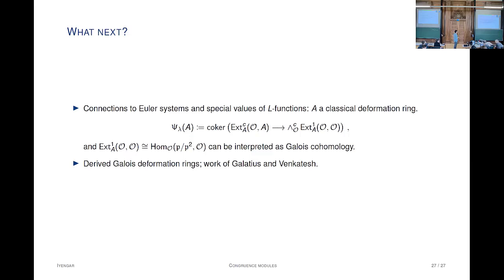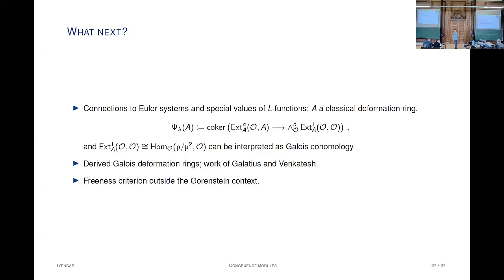The last thing: in the Diamond-Wiles context, everything was tied up with CI plus freeness. At least we have gotten past the CI bit to Gorenstein. But there are interesting examples where the deformation ring and even the patch ring is only Cohen-Macaulay and not Gorenstein, and one would like to know if there are criteria for freeness or free summands that don't involve the CI property. At the moment, I have no clue—and that's a good place to stop. Thank you for your attention.